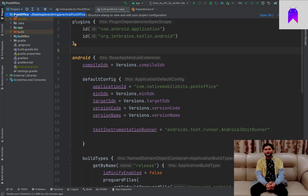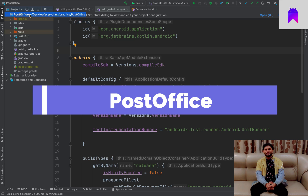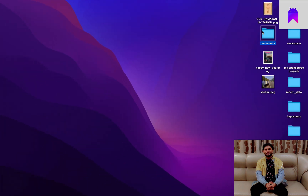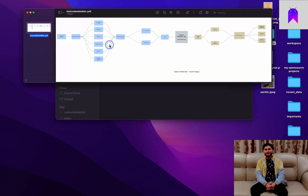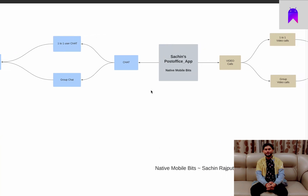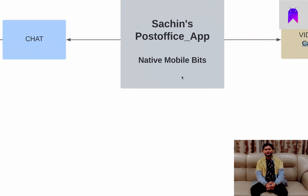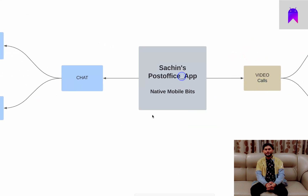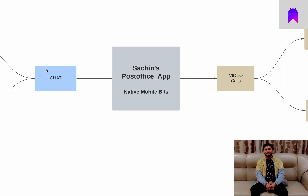Let me show you our application, which we are calling 'Post Office.' I have created an architecture label design showing what features we are going to have. This is going to be our Post Office application for React Native mobile. My name is Sachin. Our application basically has two primary functions: one is chat and another one is video calls.